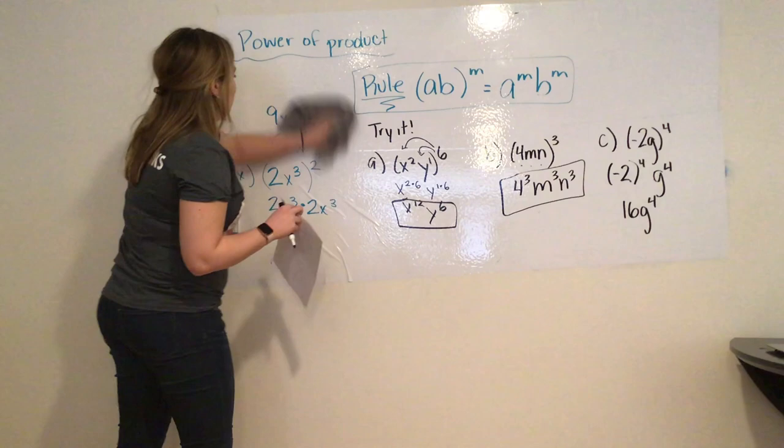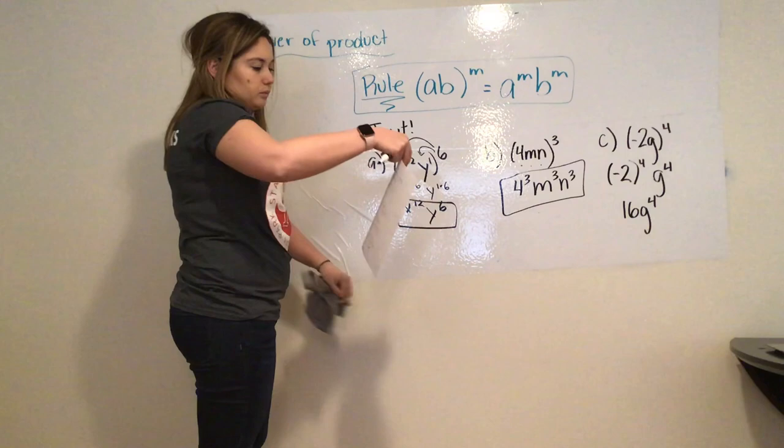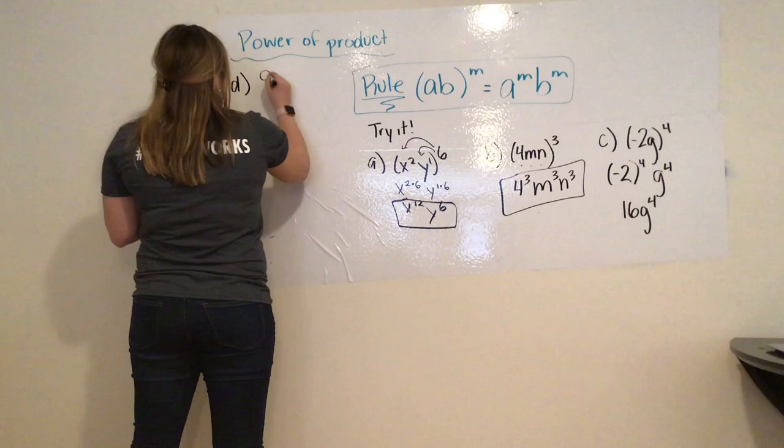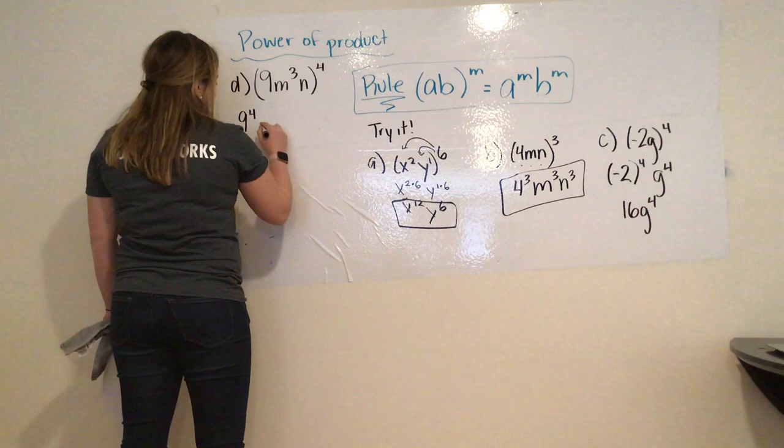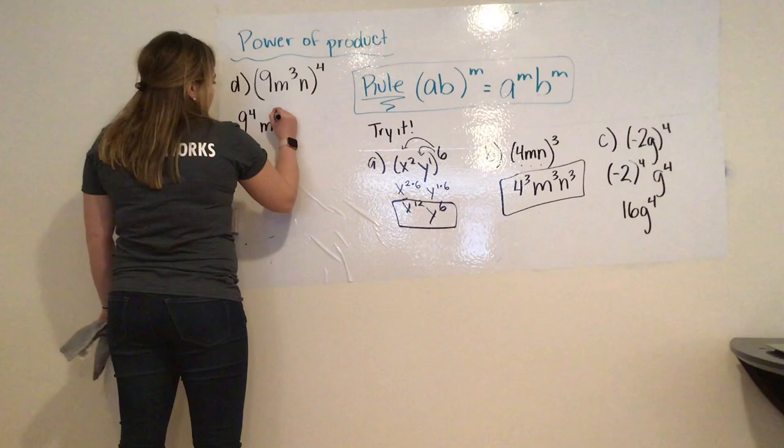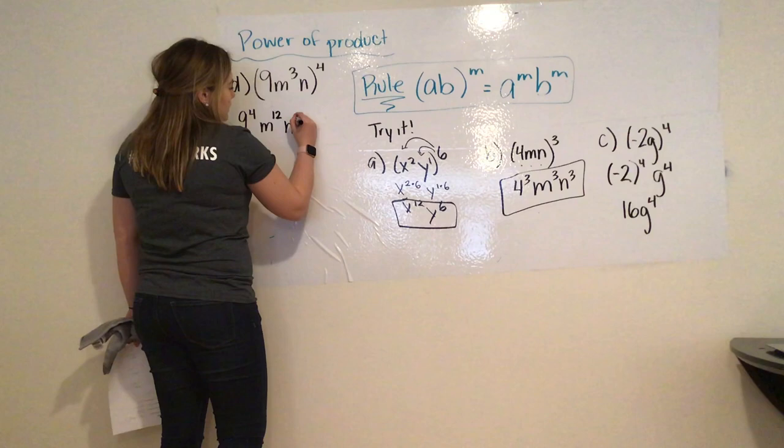Last few examples. We have D, which is 9m to the power of 3 times n, and it's all being raised to the power of 4. So, now I have 9 to the power of 4. M to the power of 3 is getting multiplied 4 times. So, it really now becomes m to the 12th. And then, n to the first power becomes n to the fourth power.